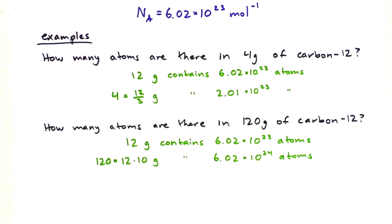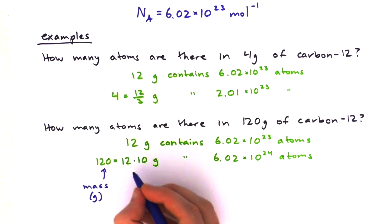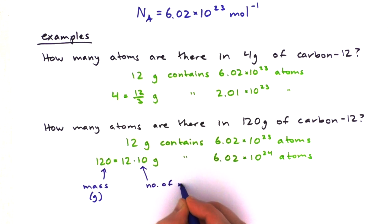We actually did something interesting here. We used a formula we're going to introduce on the next slide, which is the molar mass formula. When we did 120 equals 12 times 10, the mass was 120 grams, the number of moles was 10, and the 12 is the molar mass of carbon-12. Molar mass is how many grams one mole weighs.